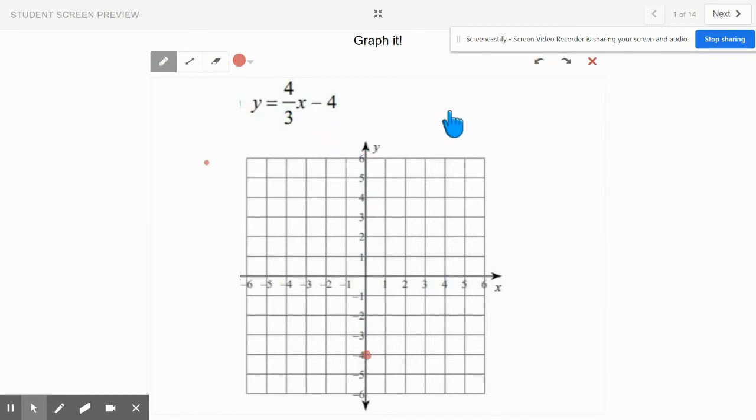And then from there your slope is 4 over 3, okay? So you're going to go up 4 to the right 3. So you're going to go up 4, rise 4, and then run 3, and then put your other point right there.